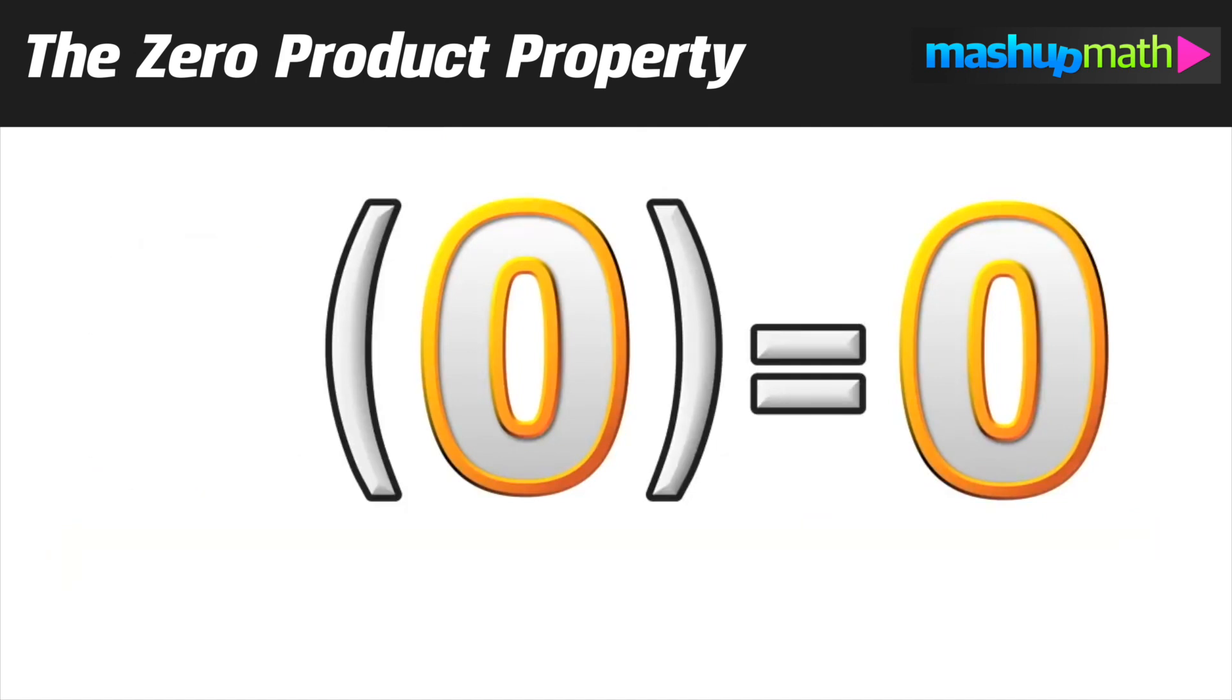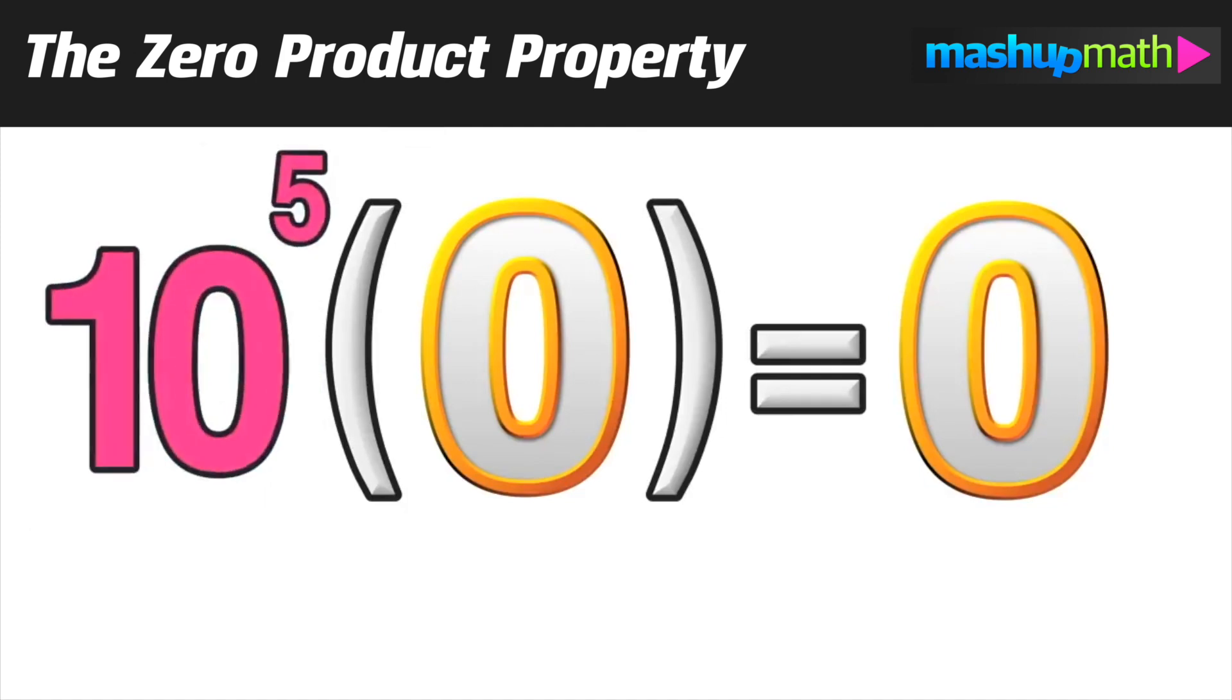Now, this is no joke. Anything times zero is going to equal zero when you're dealing with real numbers.